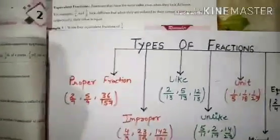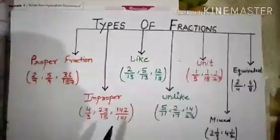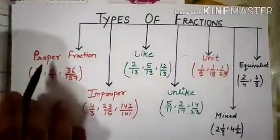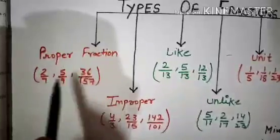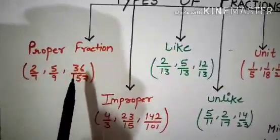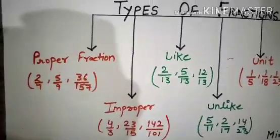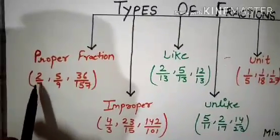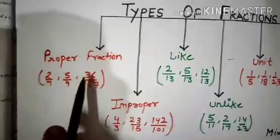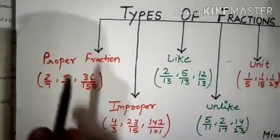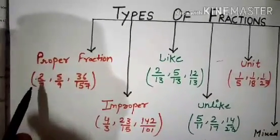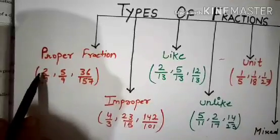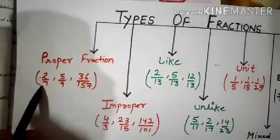Now we will discuss the Types of Fractions. The first type is a Proper Fraction. A Fraction in which the numerator is smaller than the denominator is called a Proper Fraction. For example: 2 by 7, 5 by 9, 36 by 157 — these are examples of Proper Fractions, where the numerator is smaller than the denominator. For instance, 2 is smaller than 7.